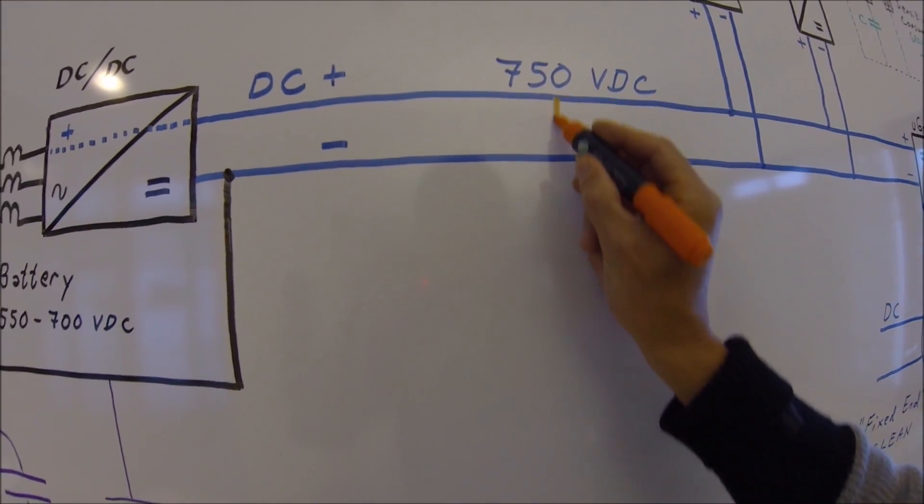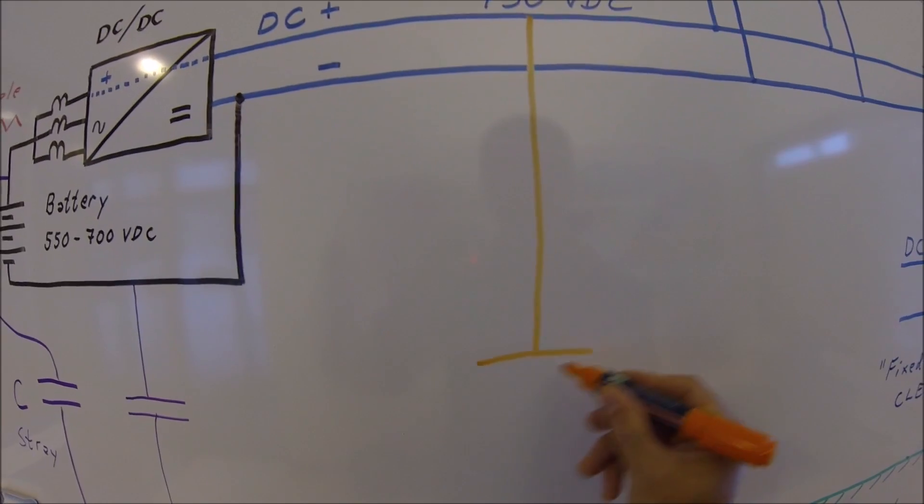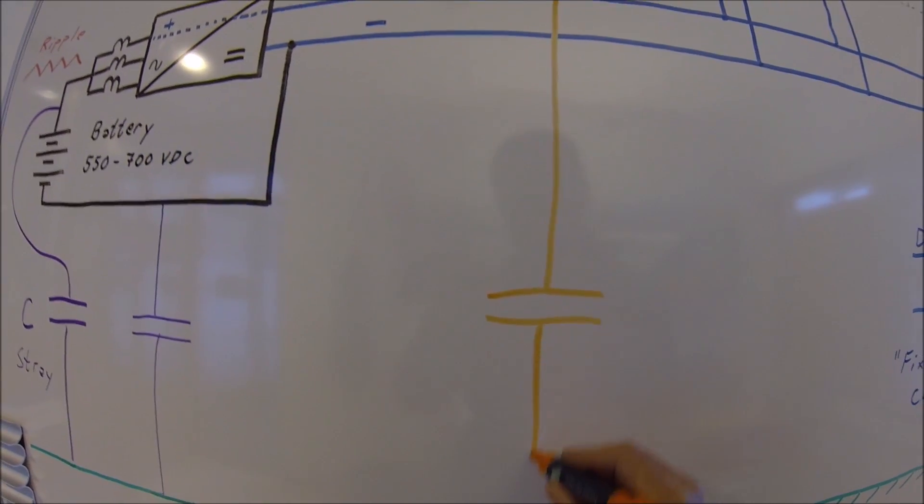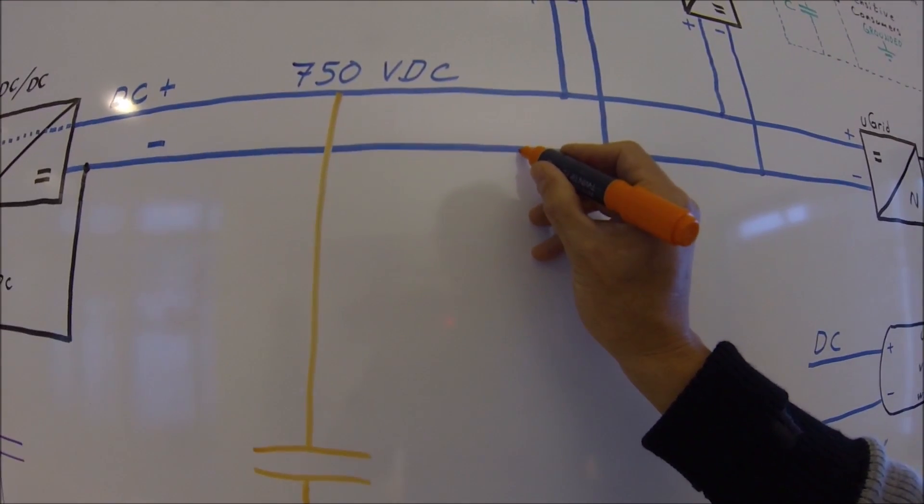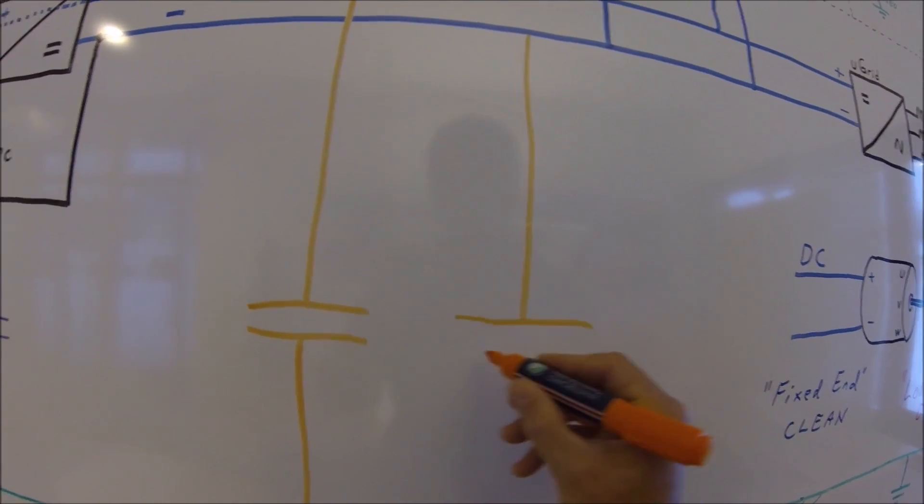It means we put capacitors here on the DC plus to the protective earth and also from the DC minus to protective earth.